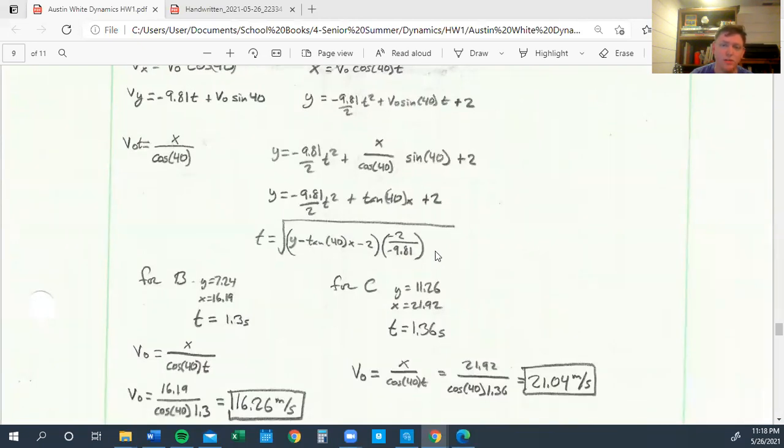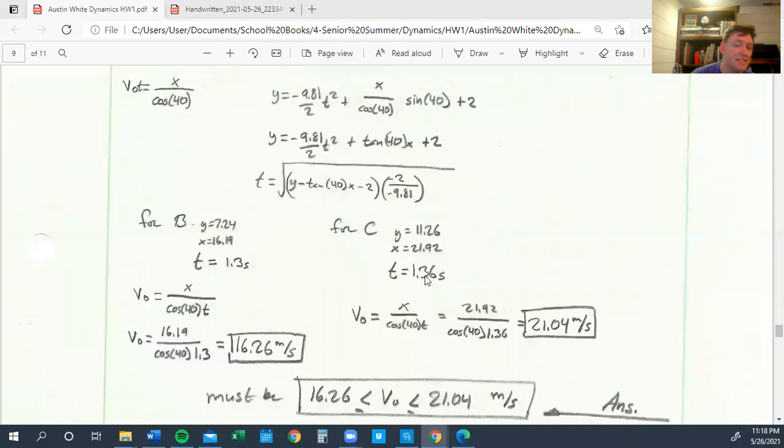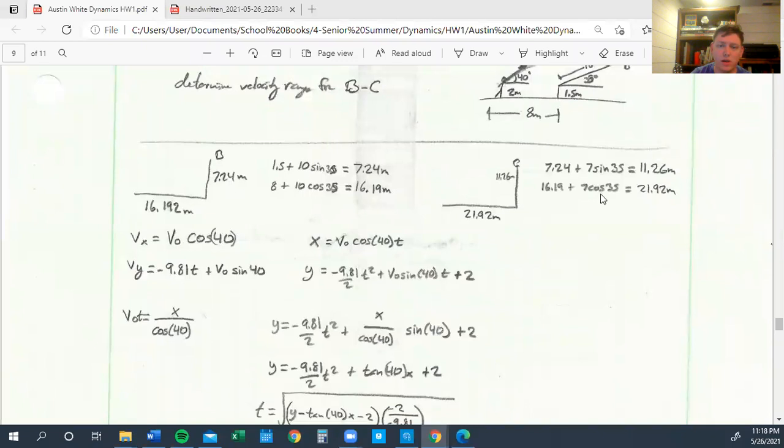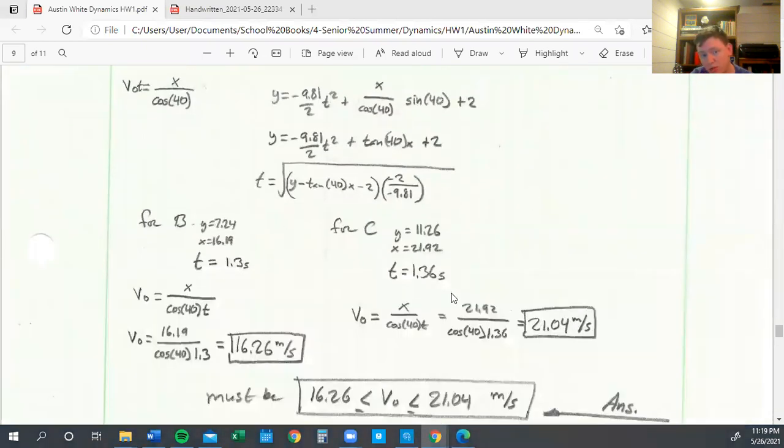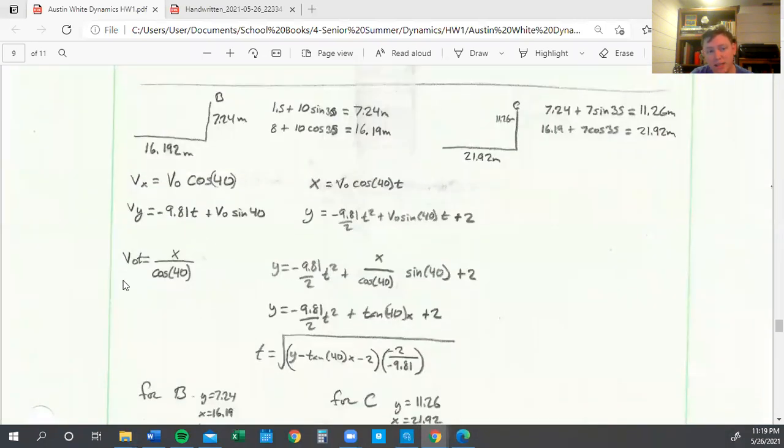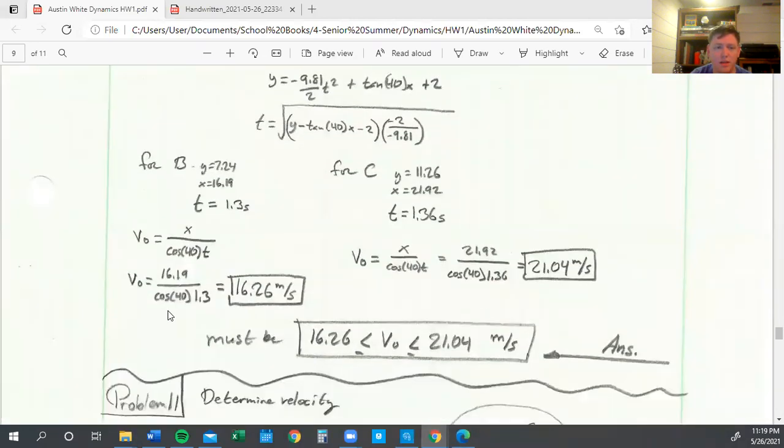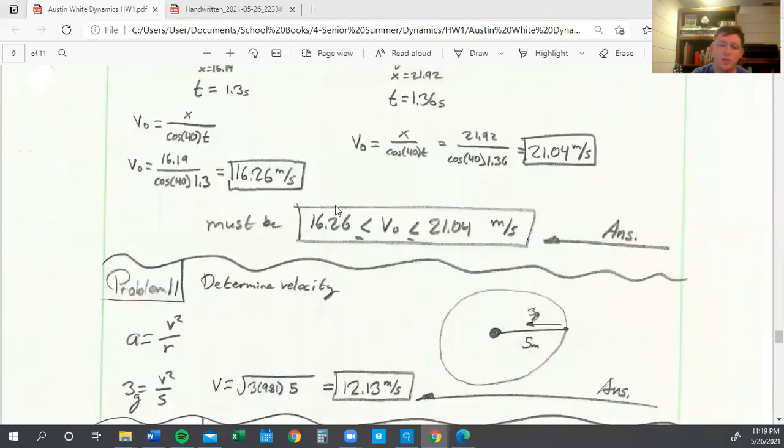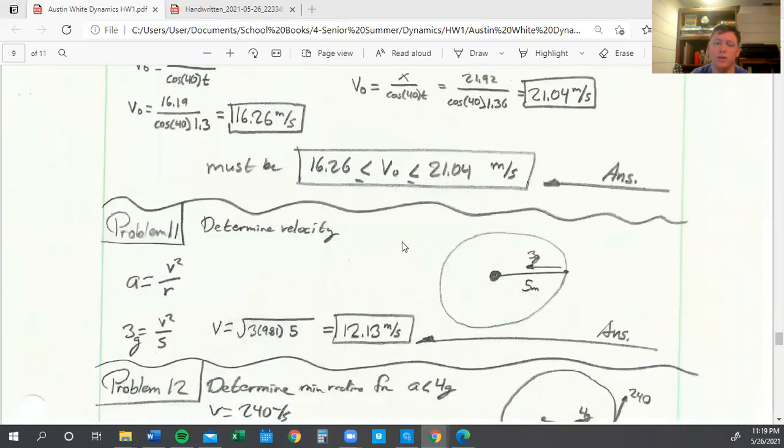For B and C, to find out the time it takes to get from the thrower, all we have to do is plug in our earlier found Y and X values. Then we can come back to the V naught T equation equals X, and find out what the V naught is. We get that B must be 16.26, C is 21.04, so our initial velocity has to be somewhere in between those.